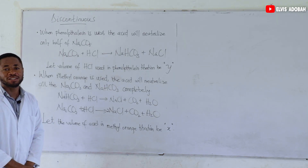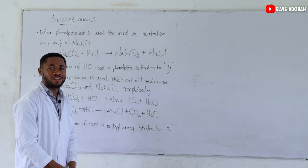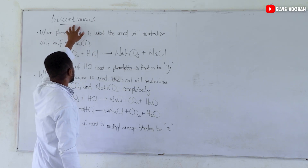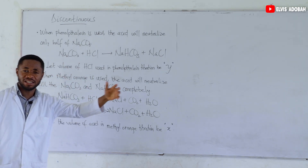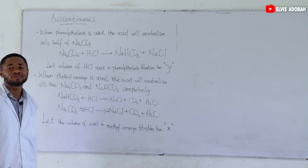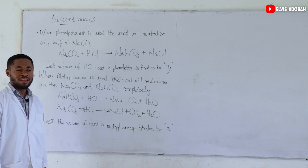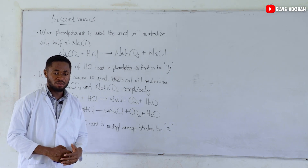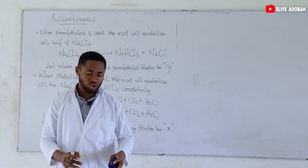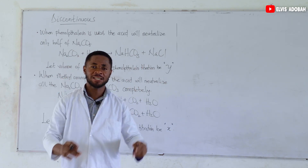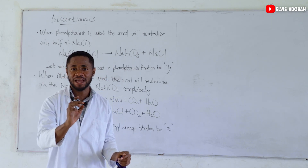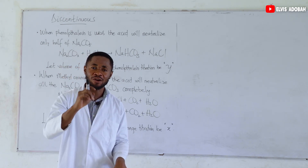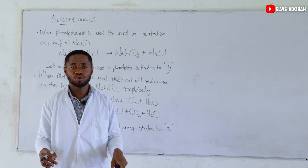Hello students, welcome once again to chemistry. In this video I want to talk about the calculations involved in discontinuous titration — discontinuous double indicator titration. It is discontinuous because you will first perform the titration using phenolphthalein as our indicator, after which you will discard the solution and perform a new titration using methyl orange as our indicator.